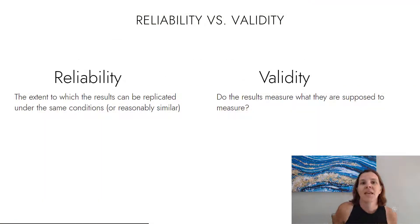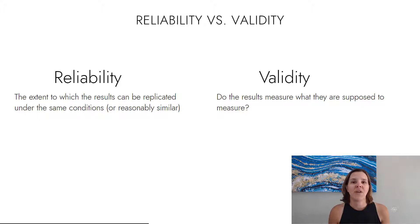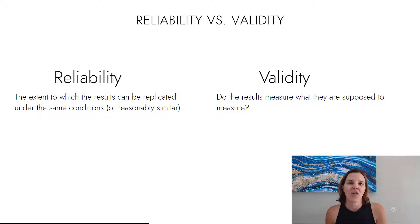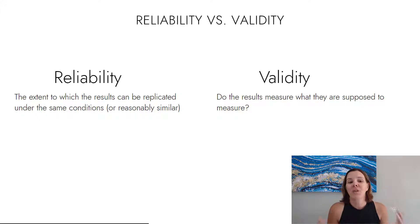Reliability refers to the extent to which results can be replicated under the same or very similar conditions. If you think about the methodology section in a research paper, those methods should very clearly delineate the steps and the process that you or the researcher went through to design, set up, and carry out the study. You should be able to take that paper and say, I understand exactly what's going on here, and I could replicate this study. That's what we mean by reliability.